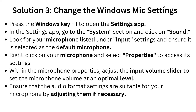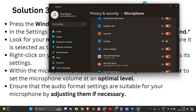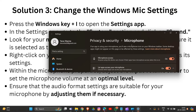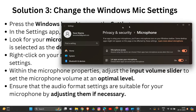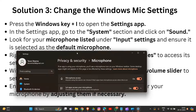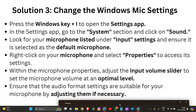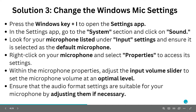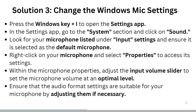For solution three, change the Windows mic settings. Simply press the Windows key plus I to open Settings. In Settings, go to the System section and click on Sound. Look for the microphone listed under input devices and ensure it is selected as the correct microphone.